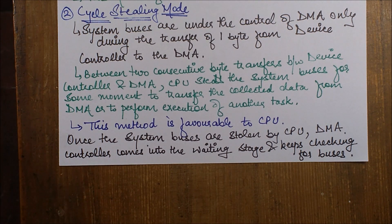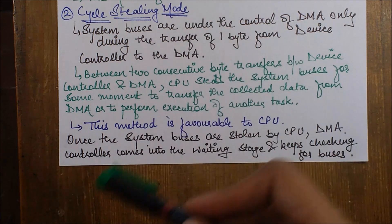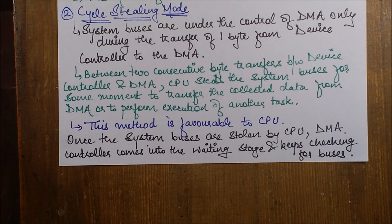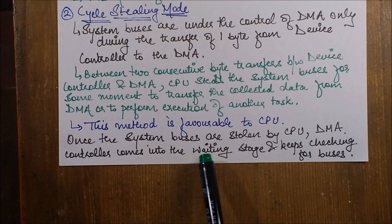So what is happening is the DMA is collecting data in parts, and the CPU is stealing the partial data collected at the DMA between byte transfers. For example, after the device controller transfers the first byte to the DMA and is processing the next byte, the CPU steals the system buses and transfers the partial data from the DMA to itself, or processes some other task. This method is favorable to the CPU. Once the CPU steals the system buses, the DMA controller goes into a waiting state and keeps checking for buses.